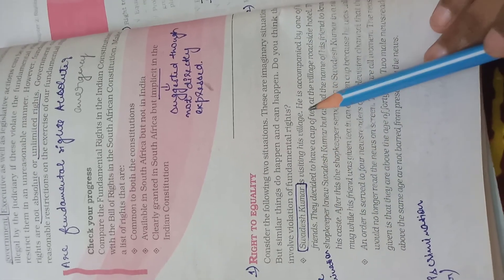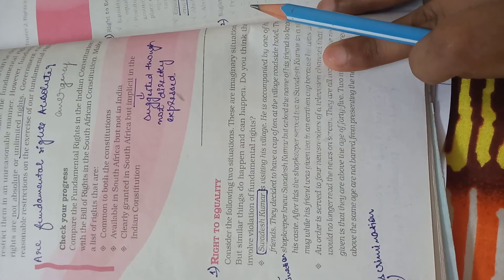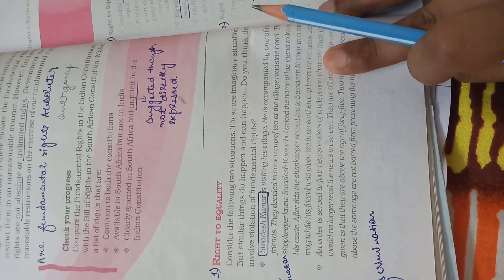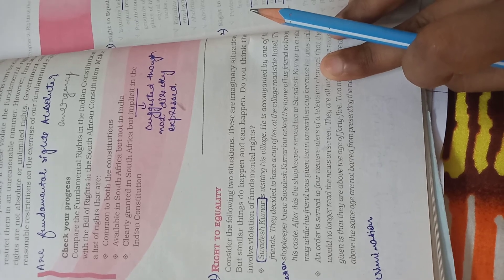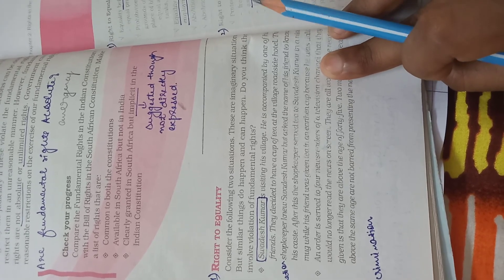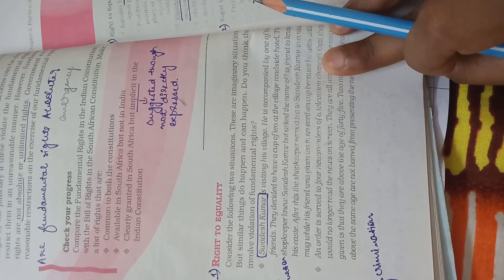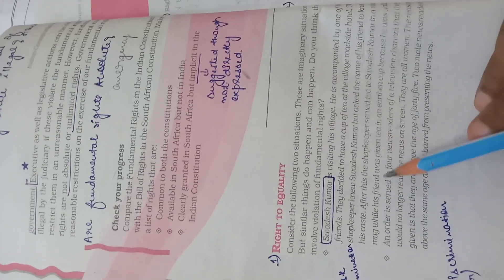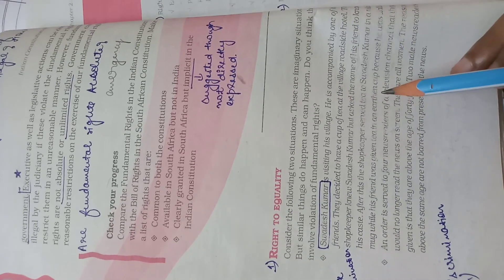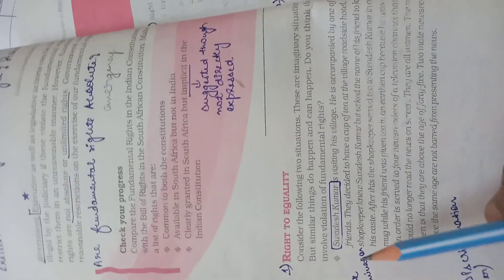Swadesh Kumar is visiting his village. He is accompanied by one of his friends. They decided to have a cup of tea at the village roadside hotel. The shopkeeper knew Swadesh Kumar but asked the name of his friend to know his caste. After this, the shopkeeper served tea to Swadesh Kumar in a nice mug while his friend was given tea in an earthen cup because he was Dalit.